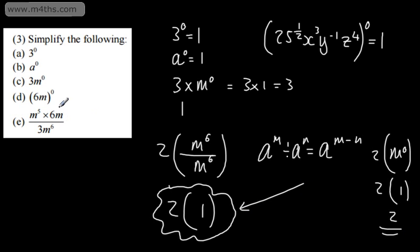I would prefer to go for this approach, but if you were ever asked to show using the 0 power rule of how this gives us 2, then we could simply go for division. We subtract the powers if the base is the same. It gives us M to the 0. Anything to the 0 power is 1.